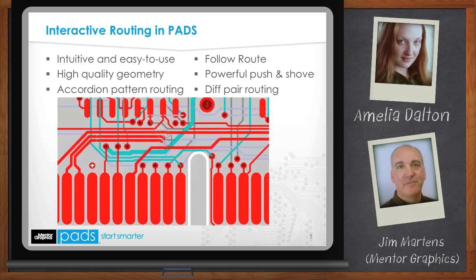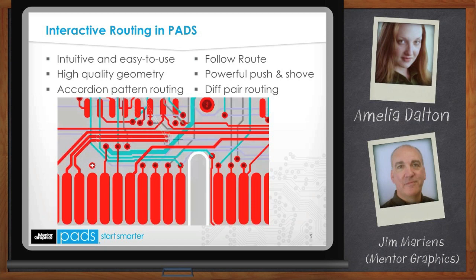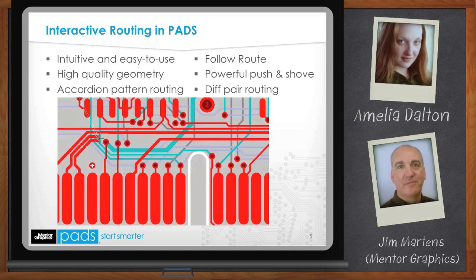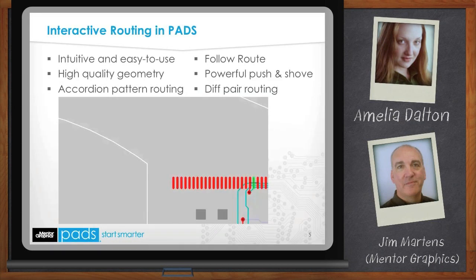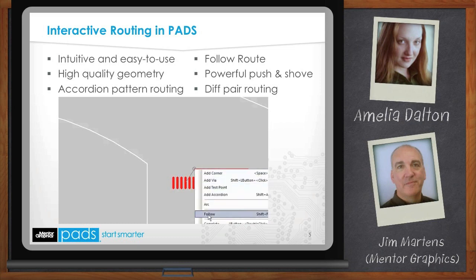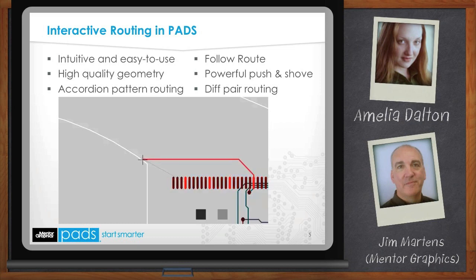Interactive guard bands show obstacles and demonstrate the real clearances to the trace being routed, providing convenient guidance when routing in tight areas — you can see exactly how much room the trace plus the clearance requires. PADS Follow Route allows routing a trace near an obstacle, a border, a copper pour, a keep-out, or another trace, and follows its geometry. This command helps maximize trace density and better utilize board space.